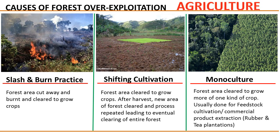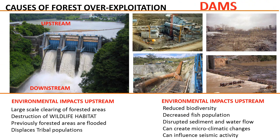Dams are generally constructed across rivers to store water for year-round irrigation and for the generation of electricity. Advantages aside, dams are environmentally damaging to forests during both the construction phase and the operation phase, with environmental damage occurring both upstream and downstream. The most interesting effect of dams is their ability to create micro-climatic changes and influence seismic activities. Another very serious issue is the effect of dams on tribal populations who have made the forest their home — these tribal people get displaced and their rehabilitation and resettlement is particularly difficult.